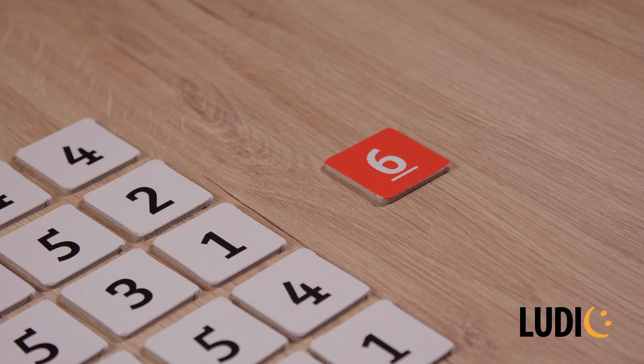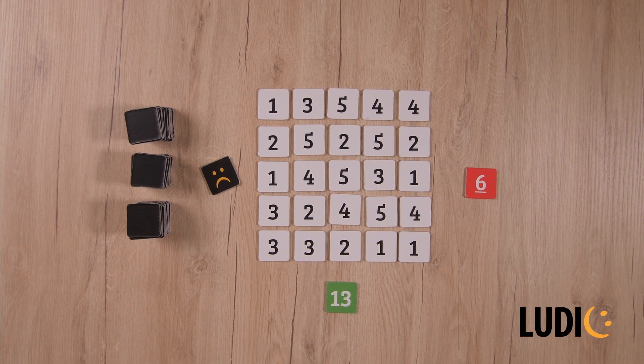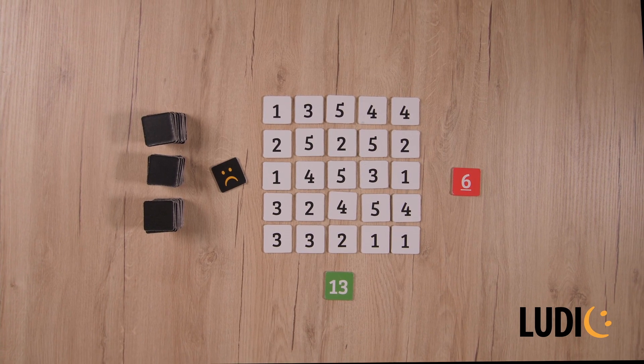The goal tile is red. The mathematical route must include at least two subtractions, and the result must be 6. Who will find it first? Done!